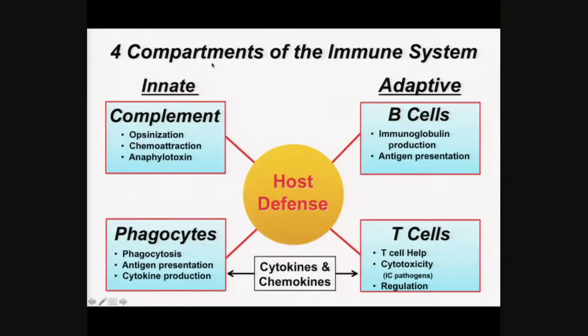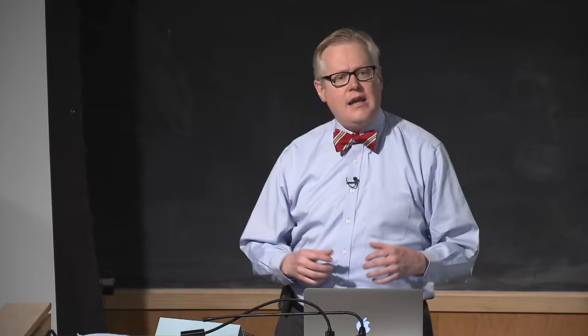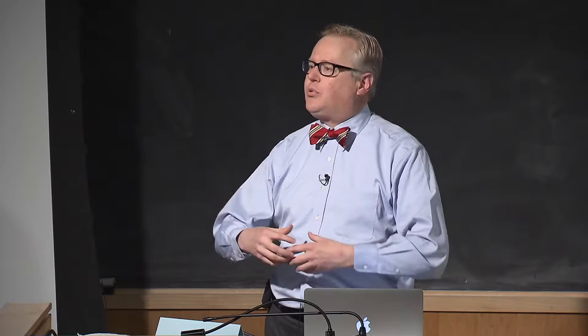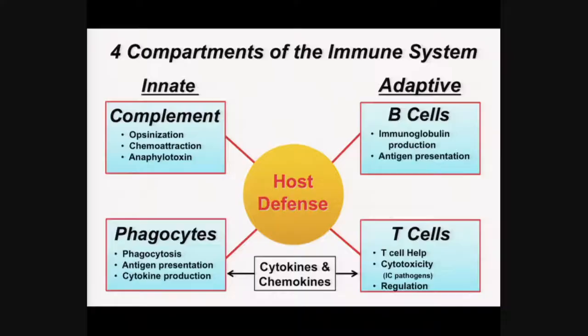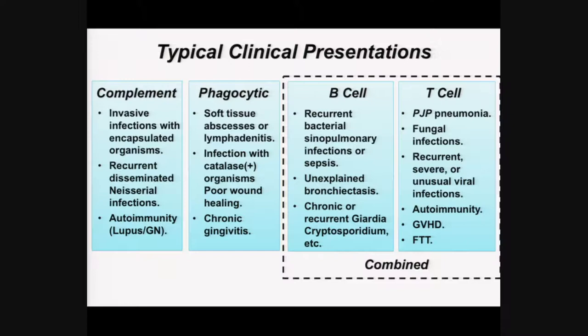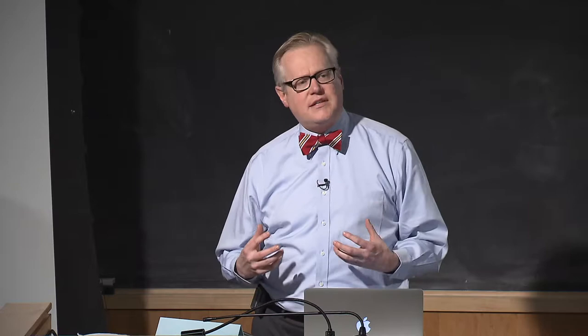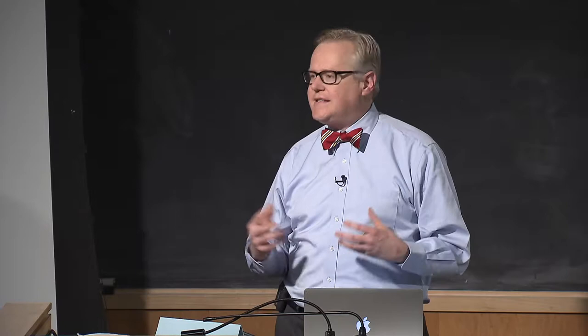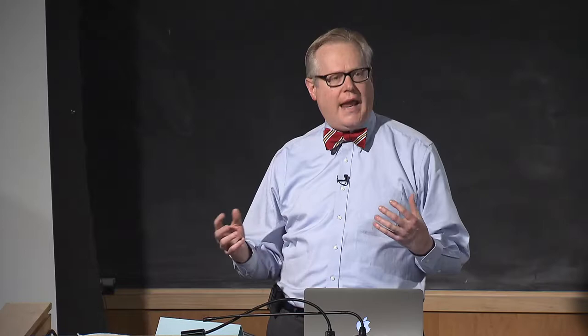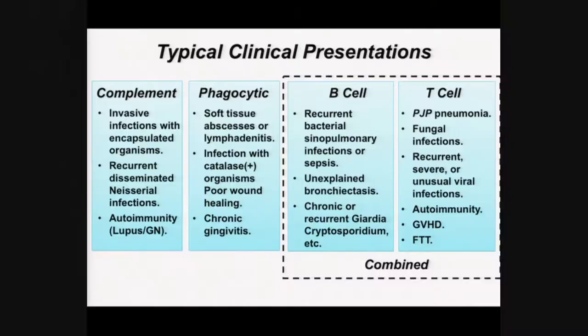Moving to the adaptive immune system: B cells play an important role in immunoglobulin production and can also act as antigen-presenting cells — taking in antigen via cell-surface immunoglobulin, breaking it down, and presenting it in MHC class II molecules. Patients with B cell defects can't make good immunoglobulin responses, and as a result get recurrent bacterial sinopulmonary infections. More than half of the immunodeficiencies we see are B cell or antibody disorders.